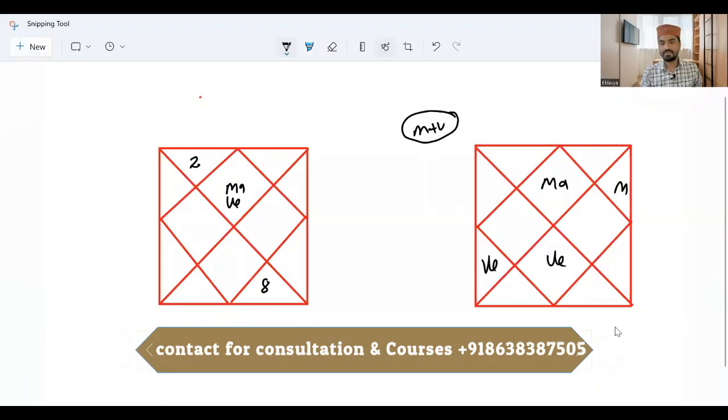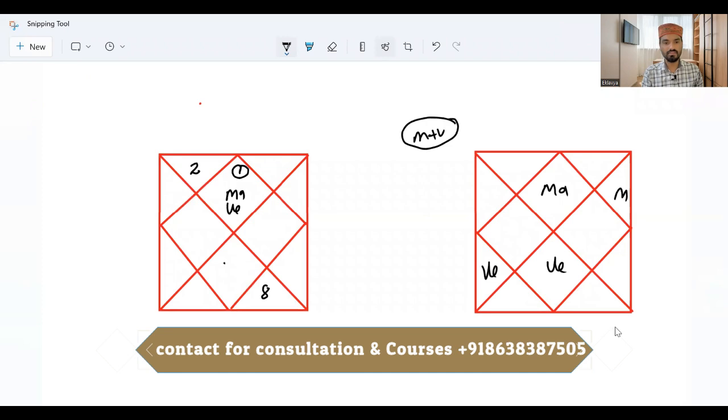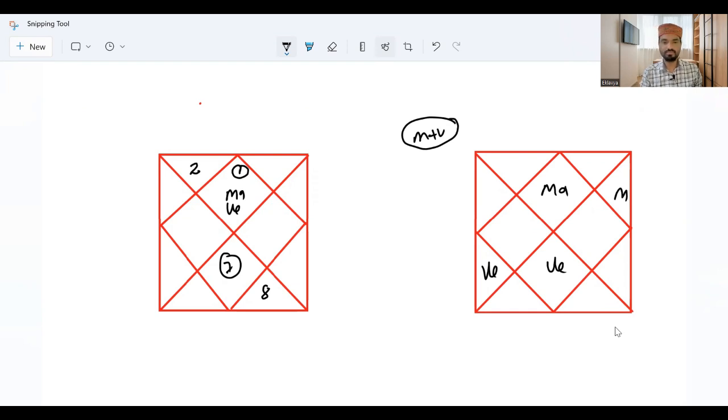Mars-Venus conjunction. Let's understand from Kalpursh Kundali that Mars is the lord of first house and Venus is the seventh house. Mars is the male and Venus is female. So this Mars-Venus conjunction is a very passionate combination or conjunction.